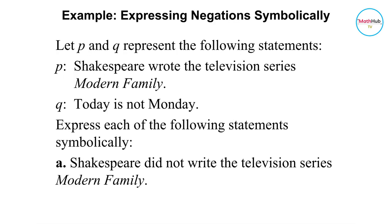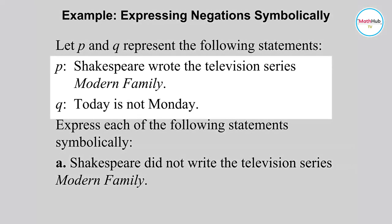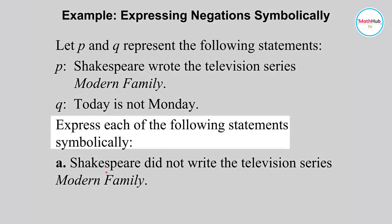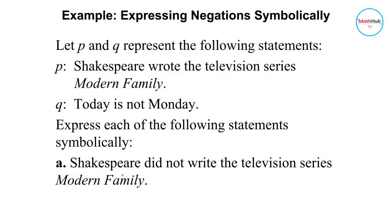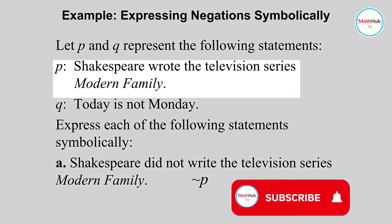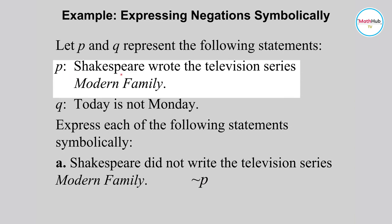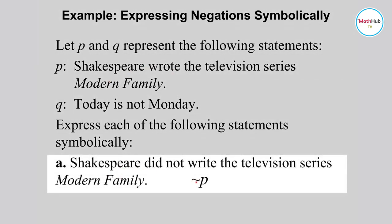Now how do we express negation symbolically? If we represent the statement 'Shakespeare wrote the television series Modern Family' as P, then the negation 'Shakespeare did not write the television series Modern Family' can be written symbolically using the ¬ symbol. This symbol is used to denote 'not P,' because the statement P refers to the original statement. So to negate statement P, we use this symbol to denote 'not' or the negation of statement P.